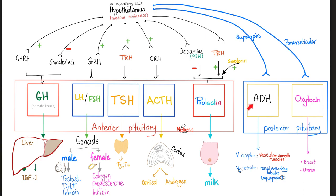The posterior pituitary releases ADH and oxytocin, but it did not make them — it just stored them. Who made ADH and oxytocin? The hypothalamus. ADH is mostly from the supraoptic nucleus of the hypothalamus, whereas oxytocin is mostly from the paraventricular nucleus of the hypothalamus. The hypothalamus also makes growth hormone-releasing hormone, gonadotropin-releasing hormone, thyrotropin-releasing hormone, corticotropin-releasing hormone, dopamine (also known as prolactin-inhibiting factor), and TRH (also known as the prolactin-stimulating factor).